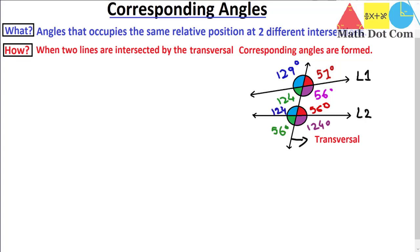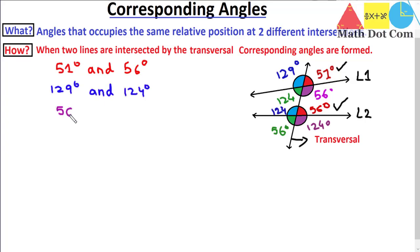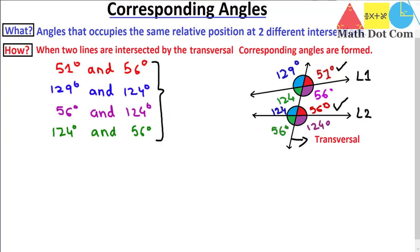Now we look at the definition again: corresponding angles occupy the same relative position at two different intersections. This 51-degree angle is at the same position as this 56-degree angle — so they are corresponding angles. Then 129 degrees and 124 degrees are corresponding to each other, 56 degrees and 124 degrees are corresponding, and 124 degrees and 56 degrees are corresponding to each other.